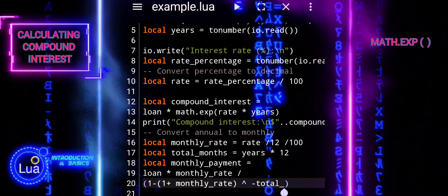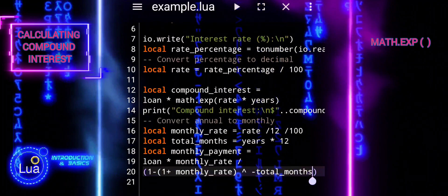The resulting monthly payment is then printed to the console with an appropriate message.